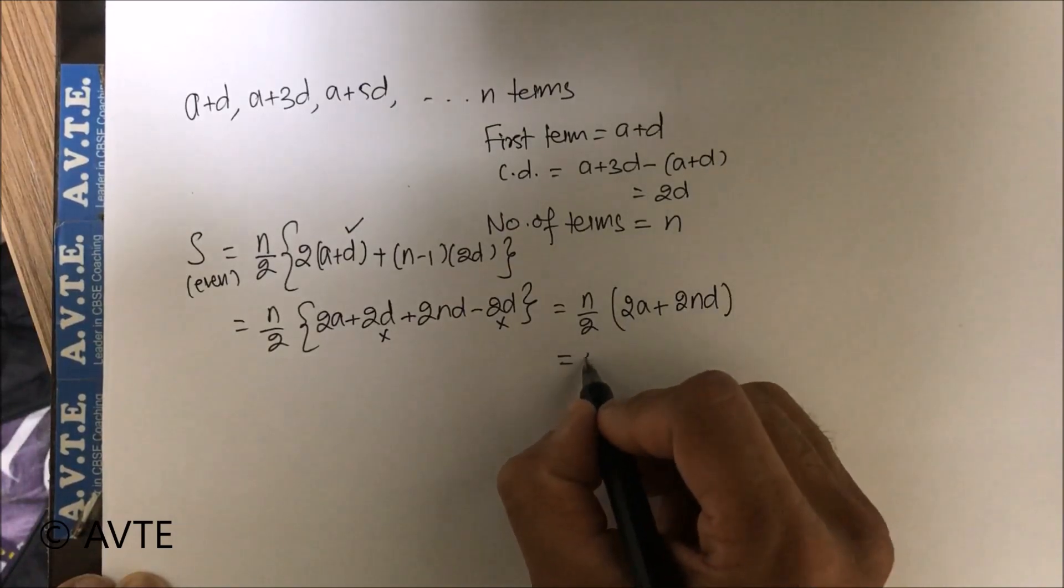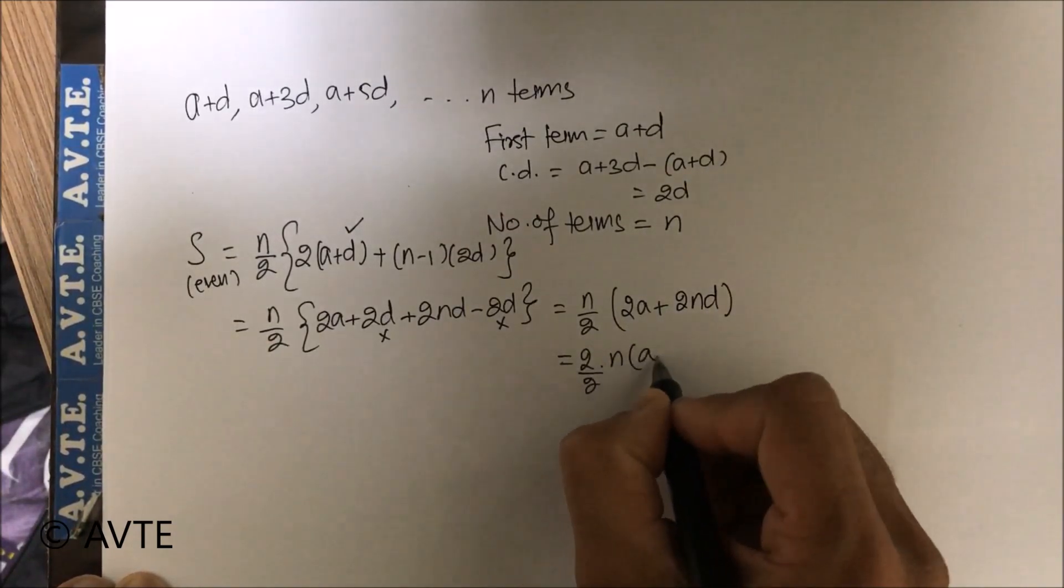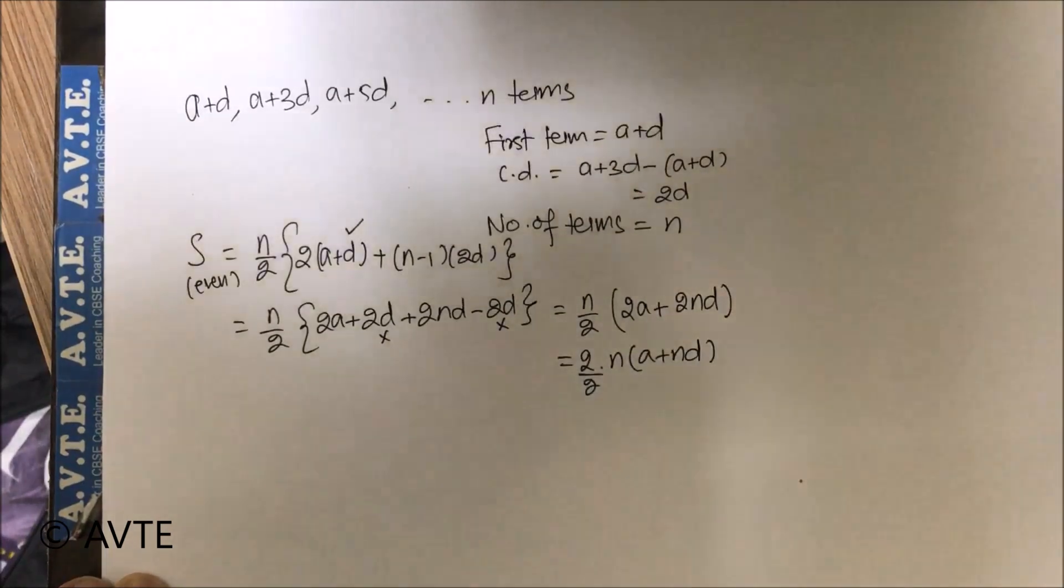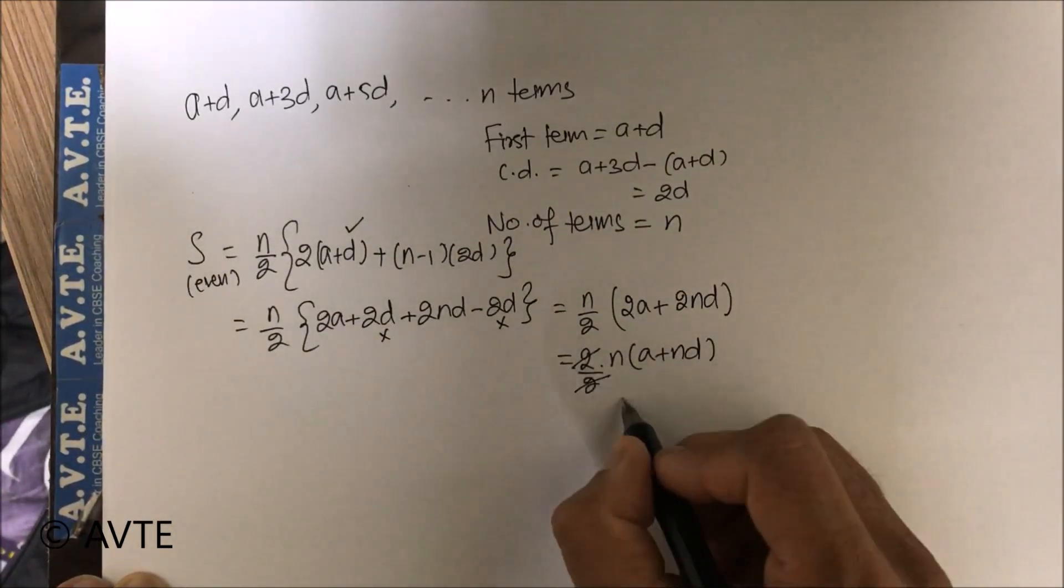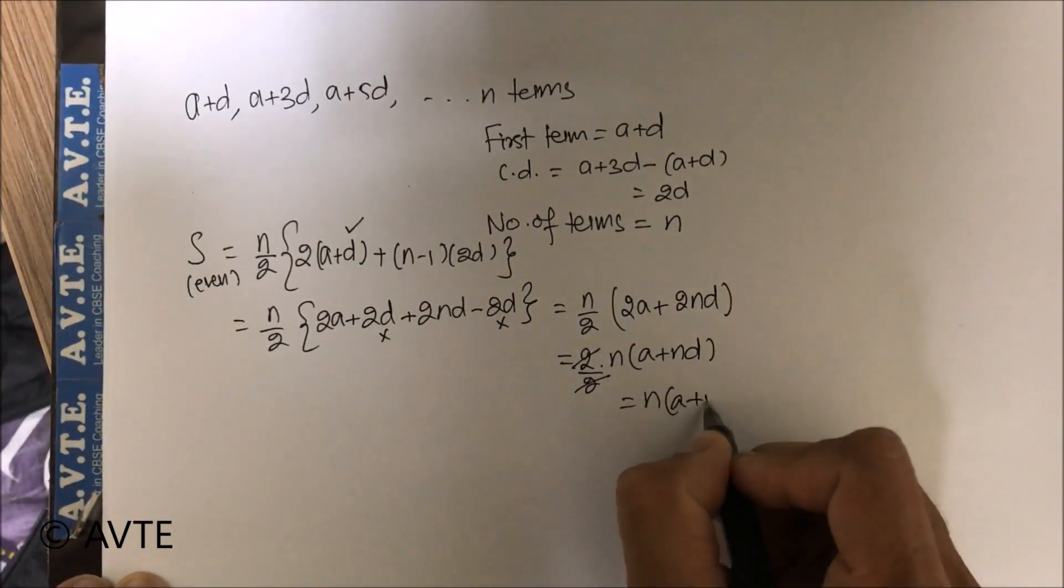Now taking 2 common, we are left with n into a plus nd.